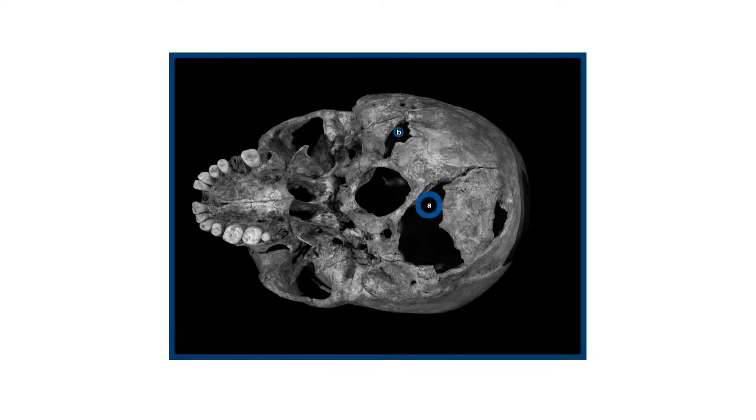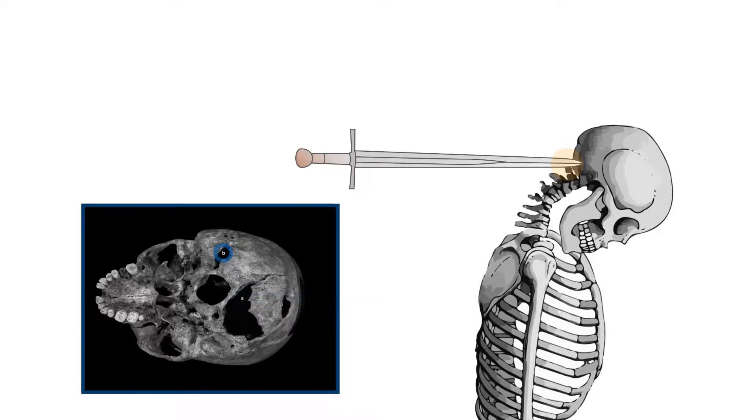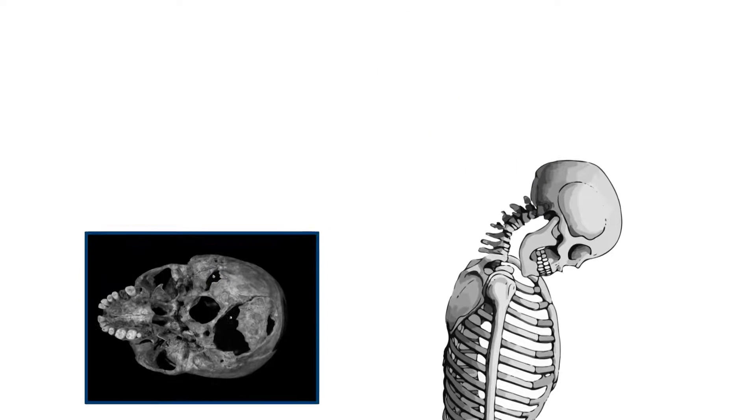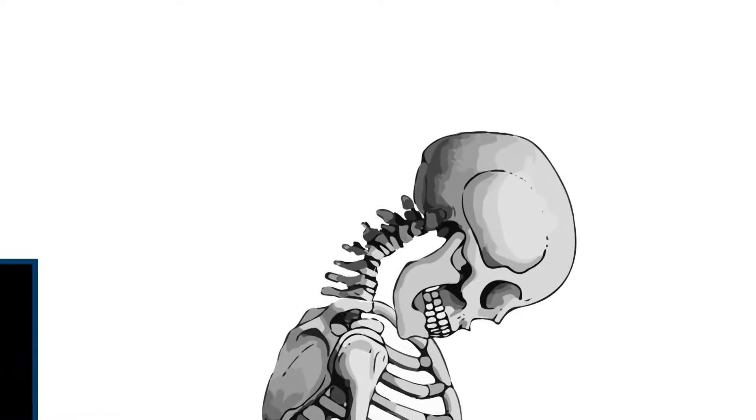Two injuries to the cranium were identified which would certainly have been fatal. A 6 by 5 centimetre wound, consistent with that from a sword or staff weapon, and a penetrating injury travelling 10 centimetres through bone and brain from a sword tip or top spike of a bill or halberd. Their position at the base of the skull suggests they were delivered from above to a victim either kneeling or prone.